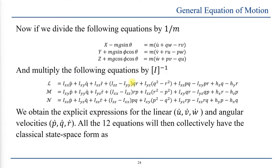If we divide the force equations by one over M and multiply the moment equations L, M, and N by the inverse of the inertia matrix I, we obtain explicit expressions for the linear accelerations U-dot, V-dot, and W-dot — the time derivatives of the X, Y, and Z direction velocities — and the angular accelerations P-dot, Q-dot, and R-dot. The dot notation denotes the time derivative. P, Q, and R are rotations about the X, Y, and Z axes respectively.